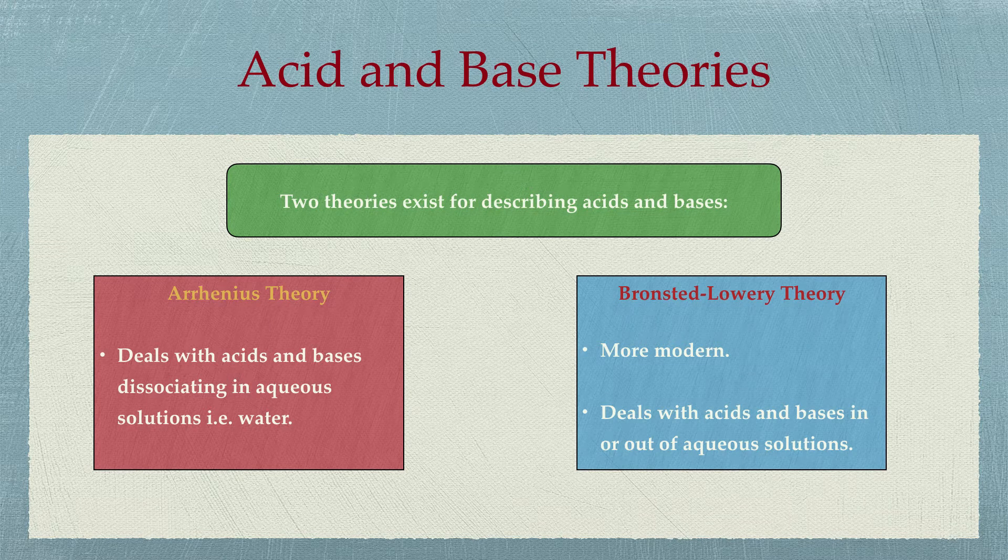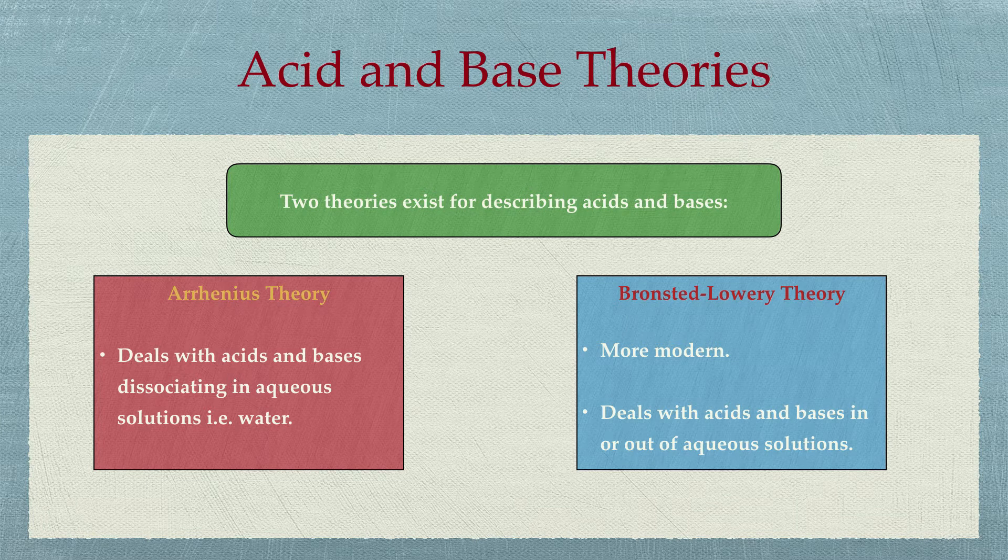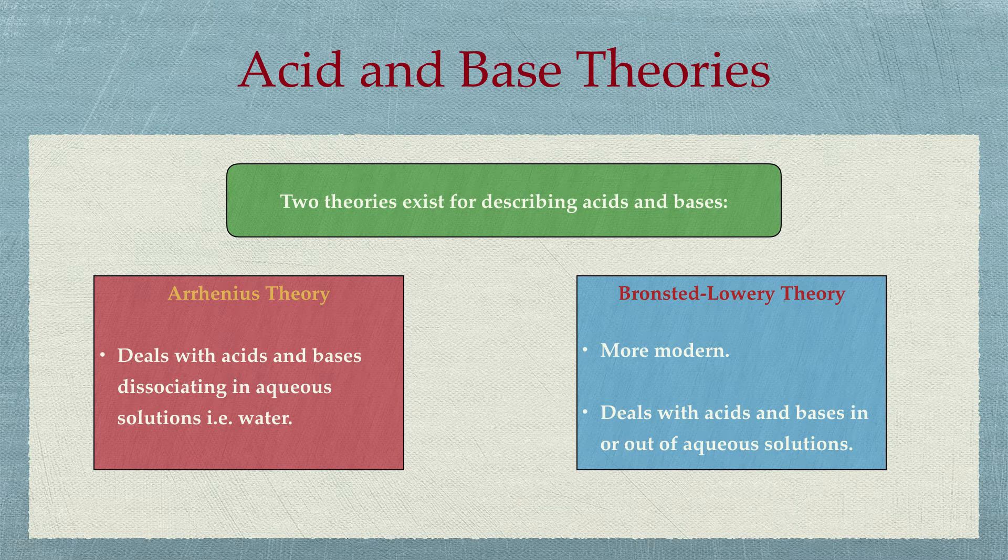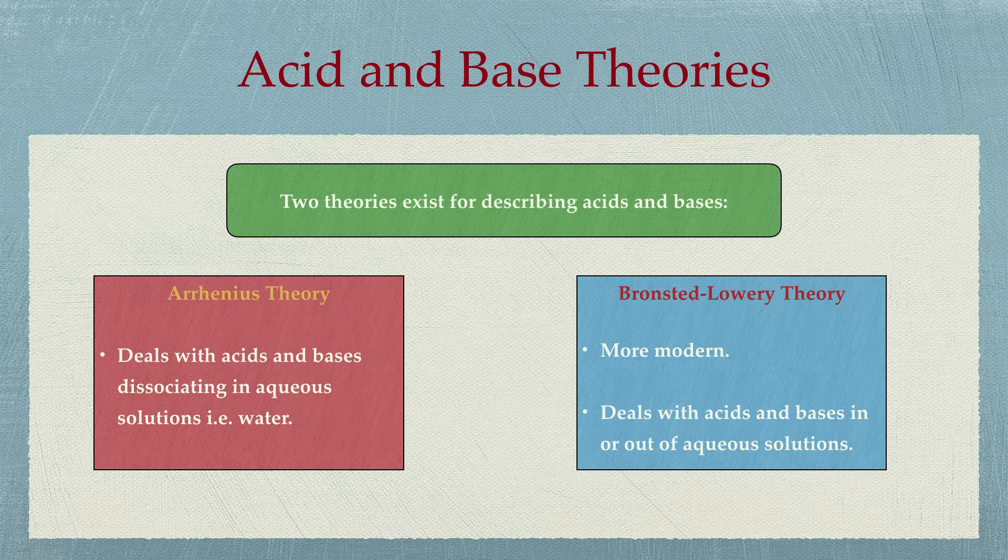Arrhenius relates to acids and bases in an aqueous solution such as water, whereas Bronsted-Lowry theory doesn't require the acid or base to be in a solution.